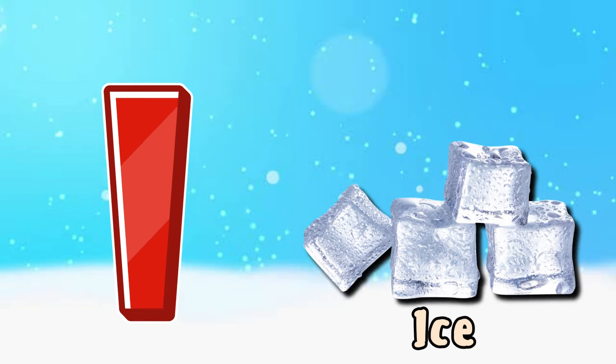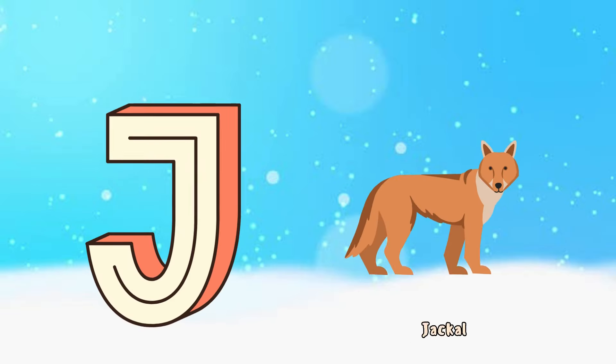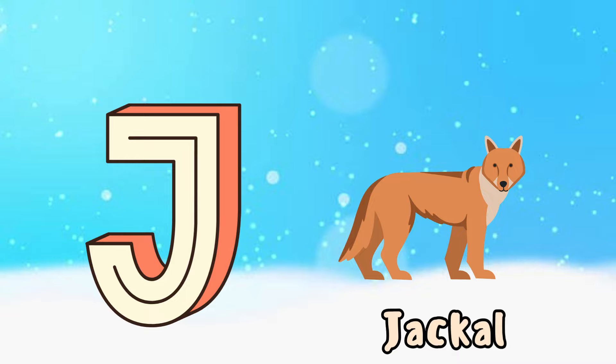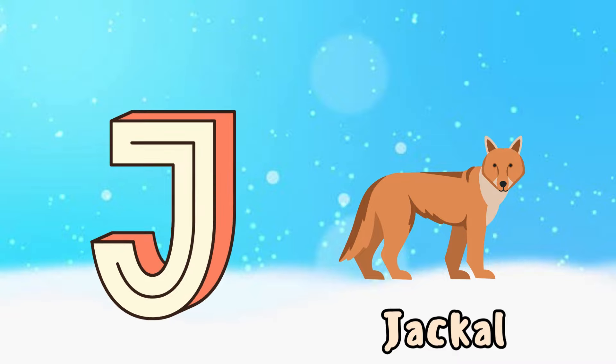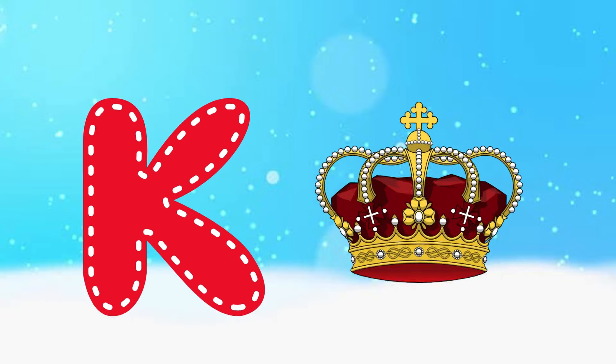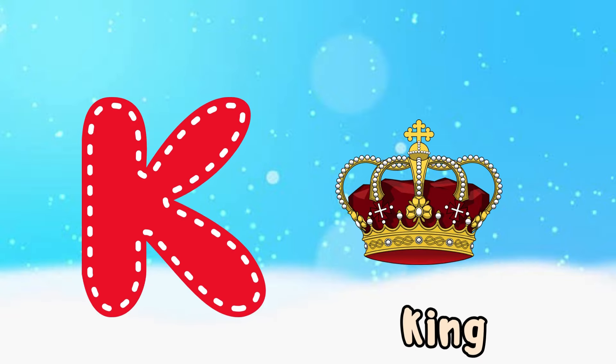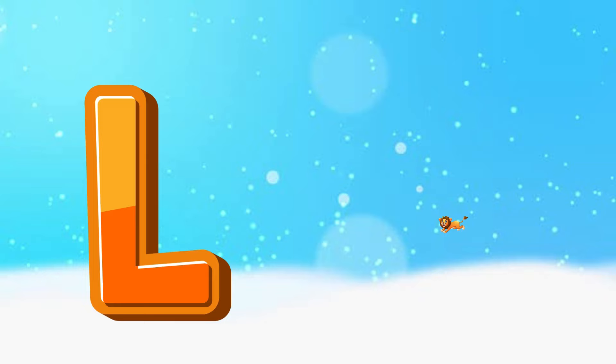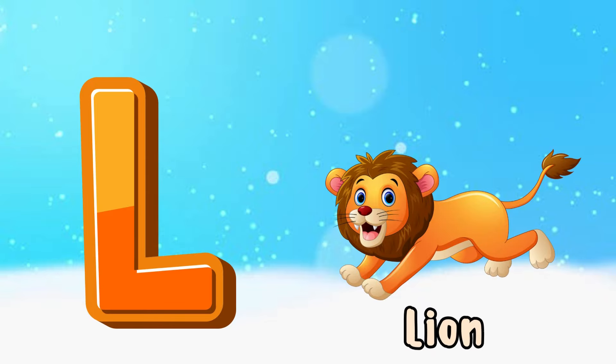I is for ice, i-i-ice. J is for jackal, j-j-jackal. K is for king, k-k-king. L is for lion, l-l-lion.